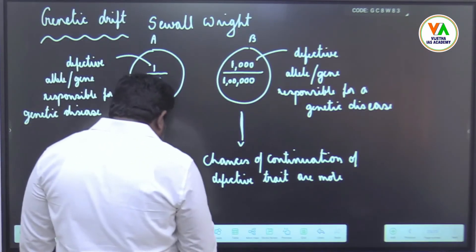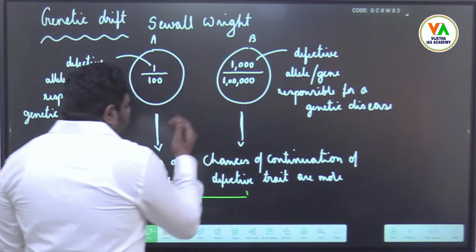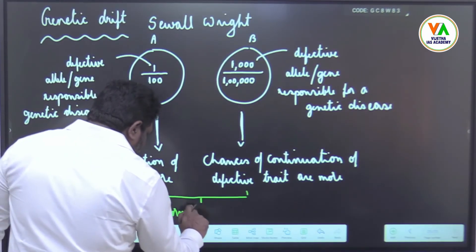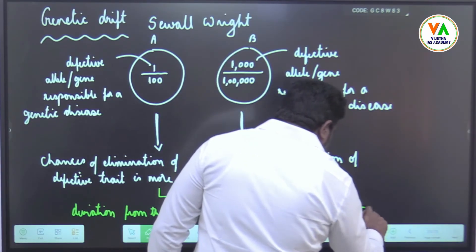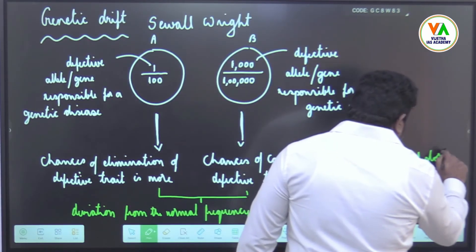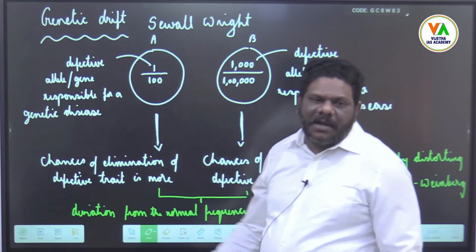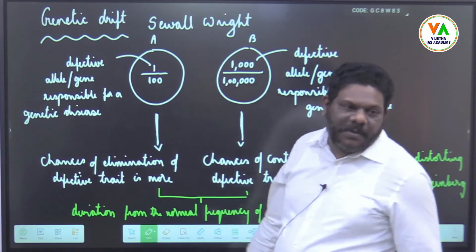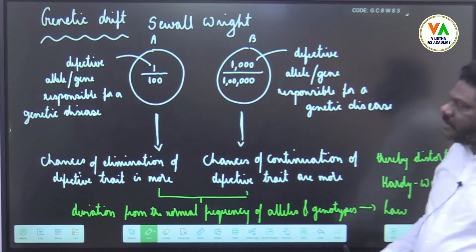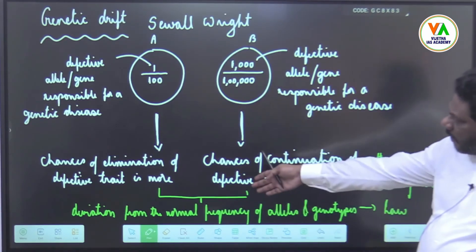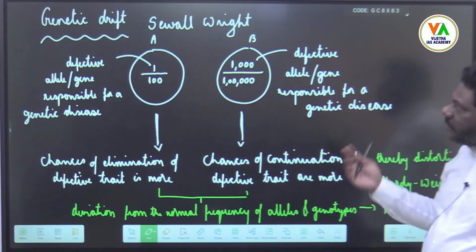In either case, it is a deviation from the normal frequency of alleles and genotypes, thereby distorting it. According to Hardy-Weinberg, the next generation should also maintain 1 in 100 and 1000 in 100,000. But in reality, this deviation from the existing gene pool occurs, which is otherwise known as genetic drift.